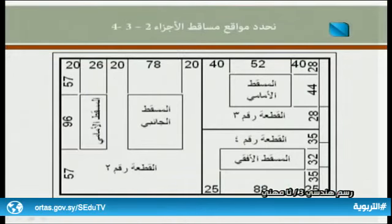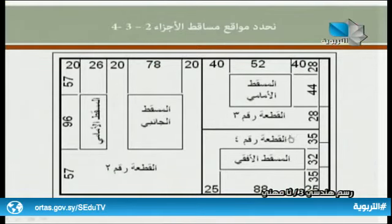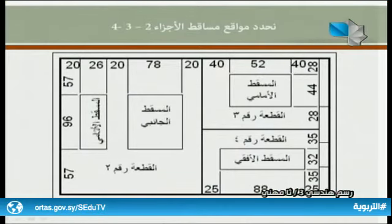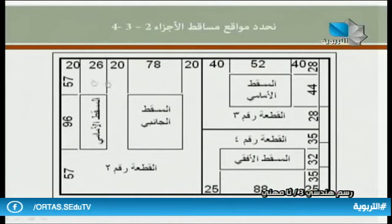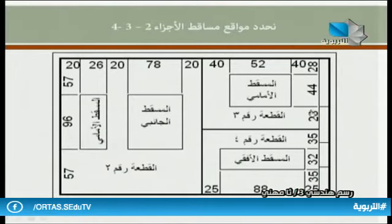نقوم بتحديد مواقع مصاقط الأجزاء رقم 2 و3 و4 بنفس الطريقة التي تعلمناها في المراحل السابقة. بعد معرفة أبعاد المسقط الأمامي والمسقط الجانبي للقطعة رقم 2، يمكن حساب أبعاد المسافات الفاصلة أفقياً وشاقولياً، وكذلك بالنسبة للمسقط الأمامي للقطعة رقم 3 والمسقط الأفقي للقطعة رقم 4.